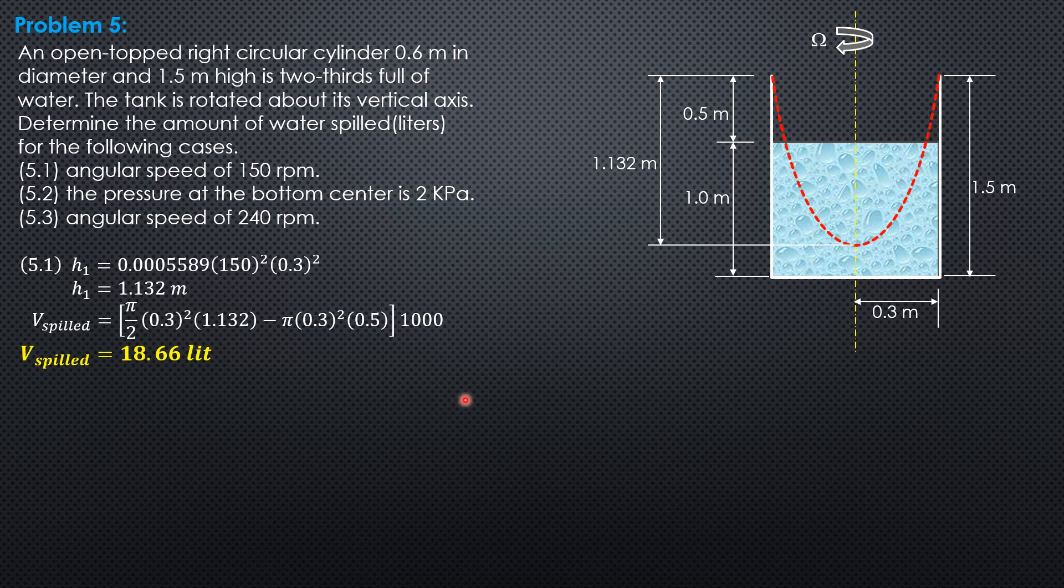For the second question, pressure at bottom center is 2 kilopascals. We must compute this depth at the bottom center called HBC. Since the pressure at all points on this imaginary parabolic surface is zero, the pressure at the bottom center is simply gamma of water times HBC, then equate it to 2.